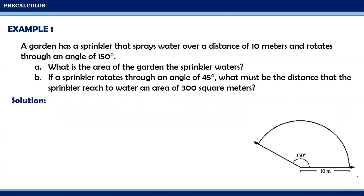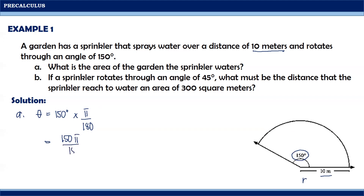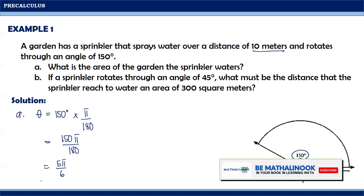An illustration is provided to help visualize the problem. From the problem, the sprinkler sprays water over a distance of 10 meters, so we consider that to be the radius. It rotates through an angle of 150 degrees, so the central angle is 150 degrees. Writing down our given for letter a: theta equals 150 degrees, which we convert to radians by multiplying by pi over 180, giving 150pi over 180, which equals 5pi over 6.